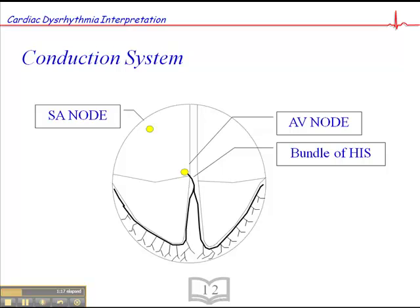Once the impulse emerges from the AV node, it hits these thick conduction fibers called the bundle of His. The bundle of His is a lot like the Autobahn.